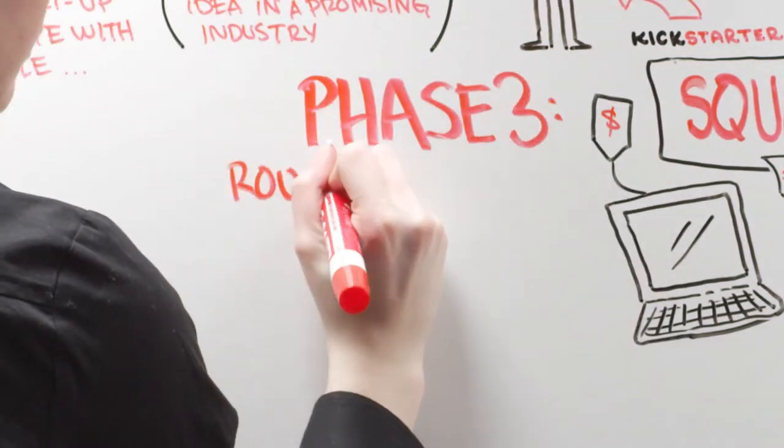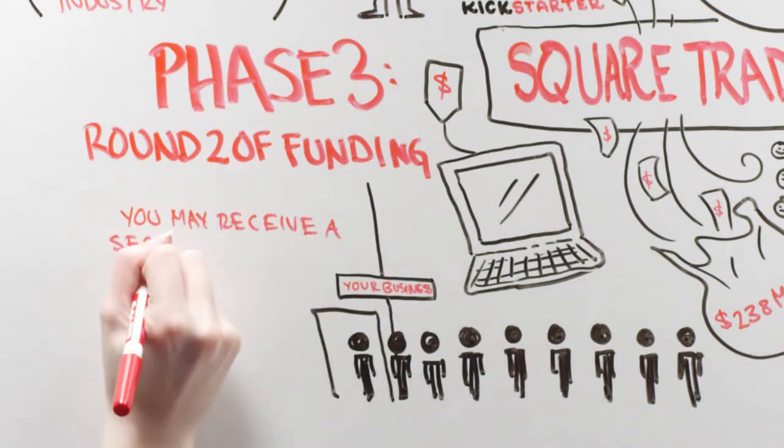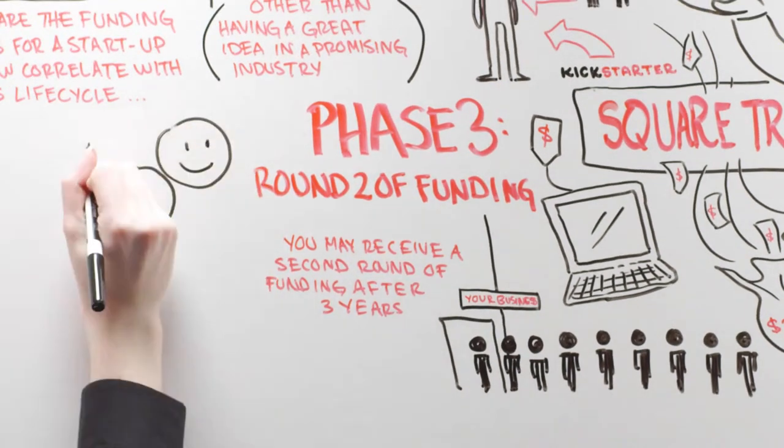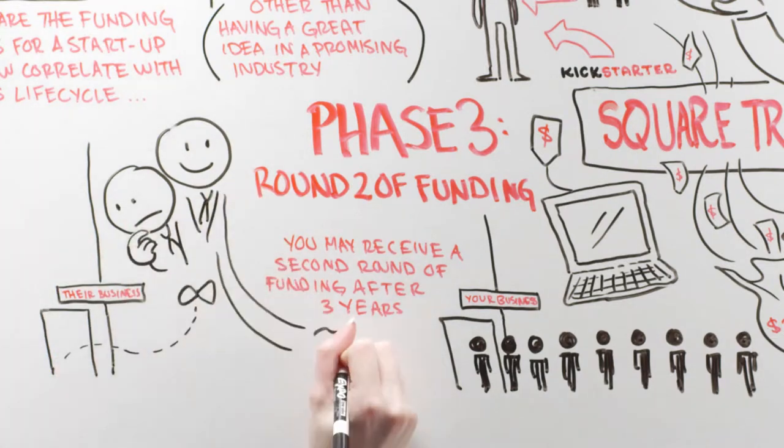Phase 3: Round 2 of funding. Provided your business is doing well, you may receive a second round of funding after three years. At this point in the VC's life cycle, the firm will look at their investments, weed out the ones that went belly up, and invest more in companies doing well.